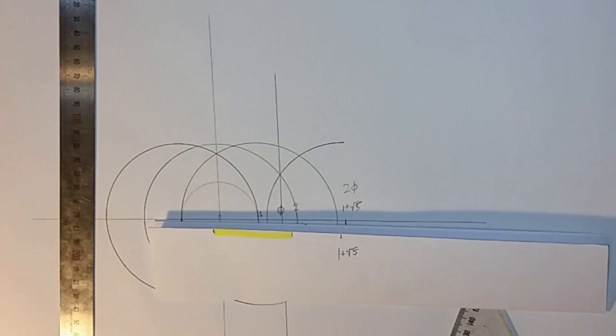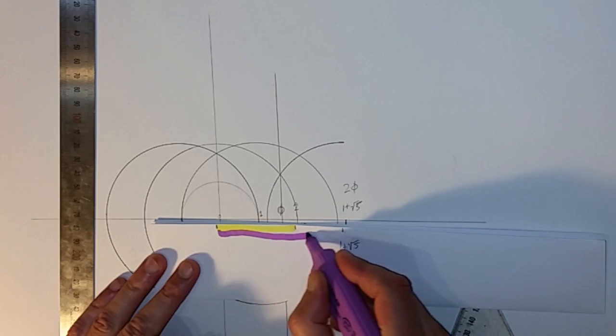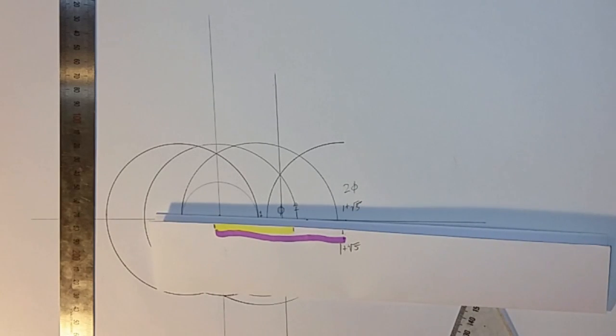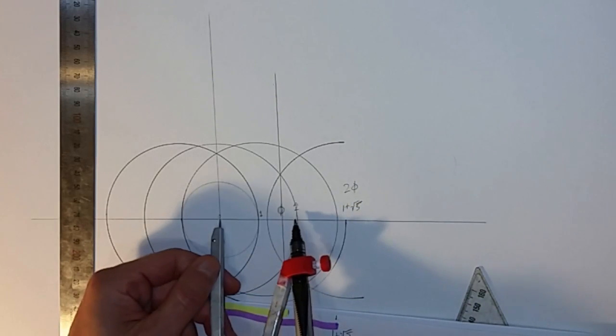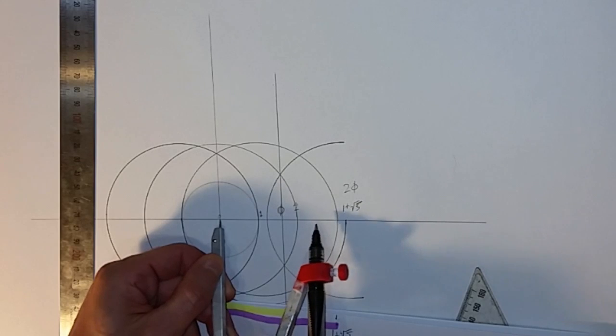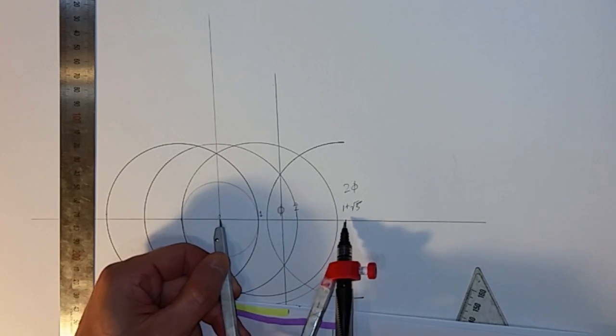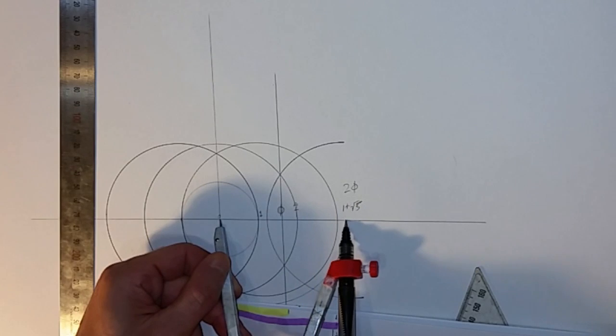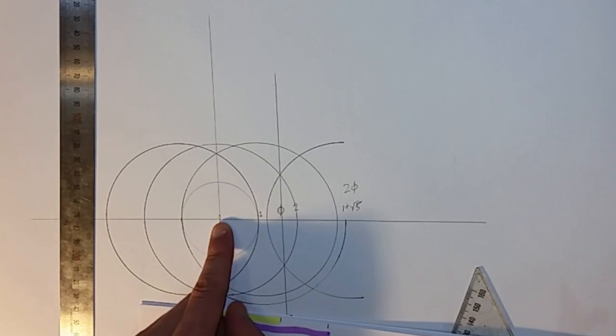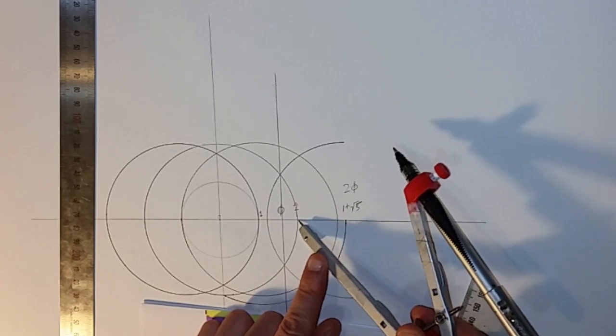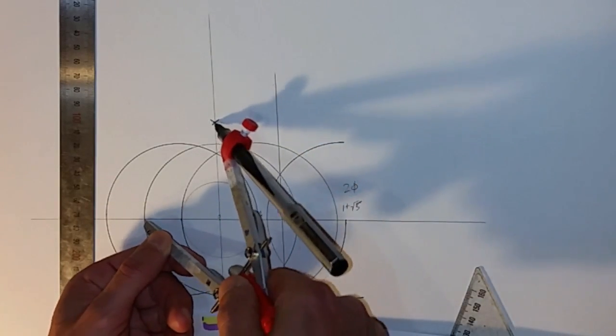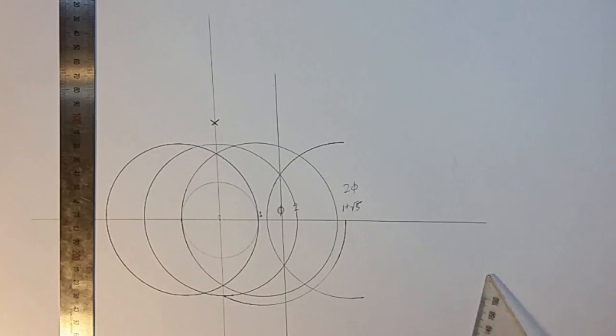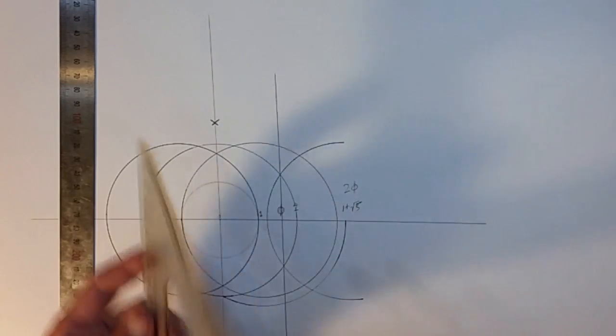With that in hand, we're going to set our compass to two pi, or one plus the square root of five. That's our zero point, now we go to two, we mark off there. Just to check, if we go to two over here, that marks off. Now we have our section of the great pyramid.